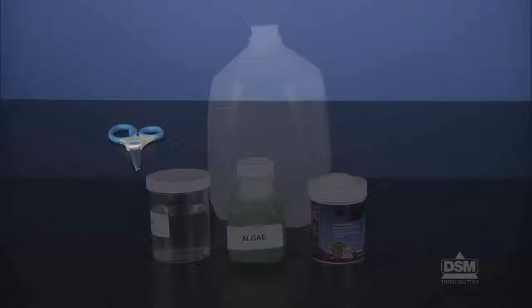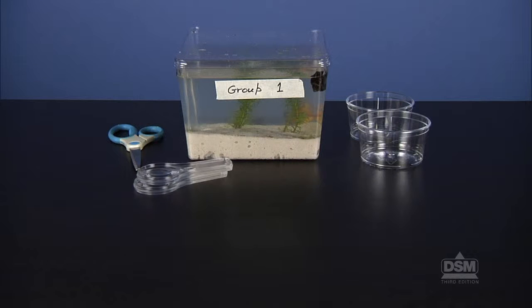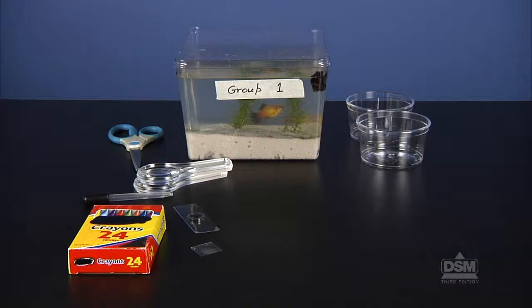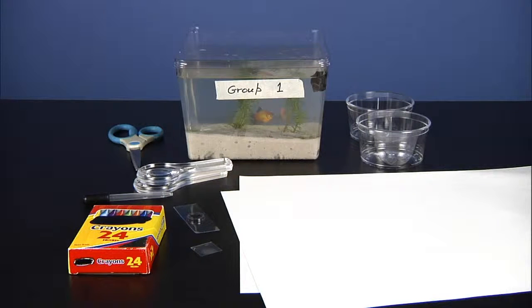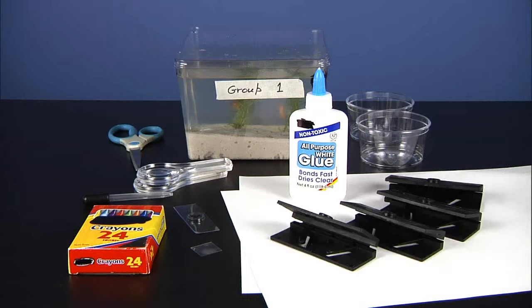Each team of four will need scissors, their aquarium, two plastic dishes, two magnifiers, one dropper, one depression slide, one coverslip, crayons, two sheets of white paper, and some glue. Teams will need to share the four pocket scopes.